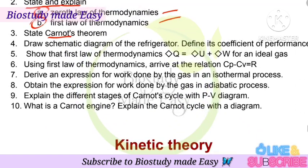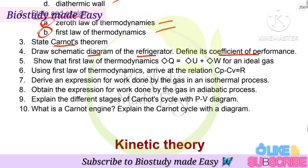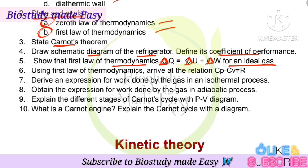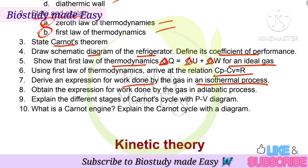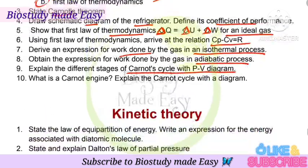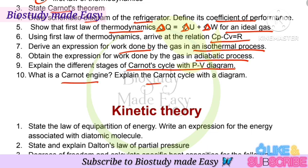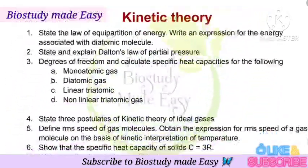State Carnot's theorem. Give a diagrammatic diagram of a refrigerator and define its coefficient of performance. Show that for the first law of thermodynamics: delta Q = delta U + delta W. For an ideal gas using the first law of thermodynamics, arrive at the relation Cp minus Cv = R. Derive an expression for work done by the gas in an isothermal process and in an adiabatic process. Explain the different stages of the Carnot cycle with a P-V diagram and what is a Carnot engine.